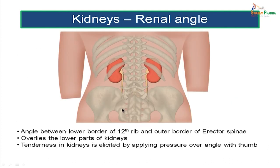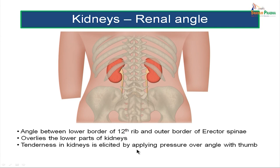The first thing is the renal angle. The angle between the 12th rib and the lateral aspect of the erector spinae muscle is called the renal angle. Tenderness in the kidneys is elicited by applying pressure over this renal angle with the thumb. That is the significance of the renal angle.